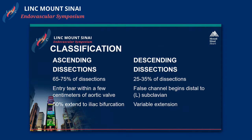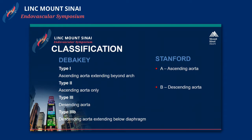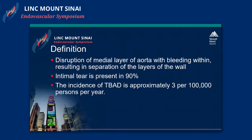Classification: most of the dissections are usually ascending, about a third will be descending, starting distal to the subclavian. The most common classification used to define these dissections is the Stanford, where the B dissection is descending. A description of the dissection is a disruption in the media layer of the aorta, causing a separation in the wall. Intimal tear is present in 90% of patients.